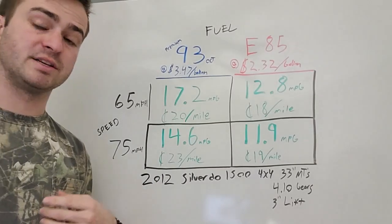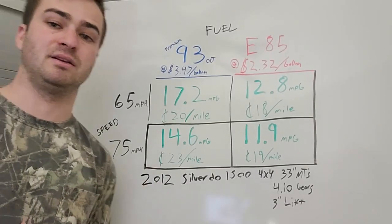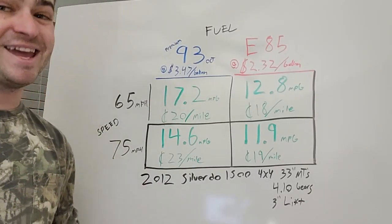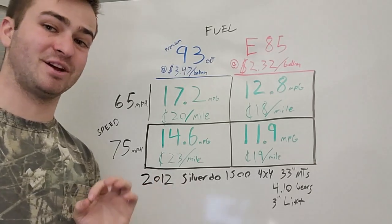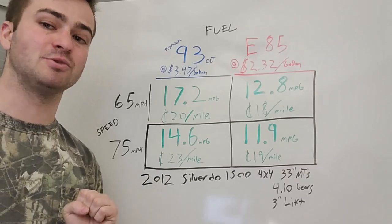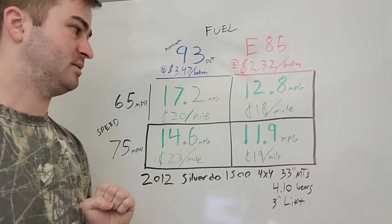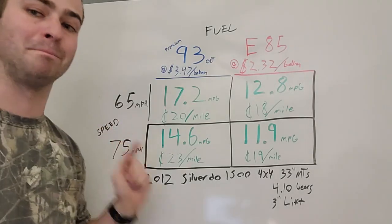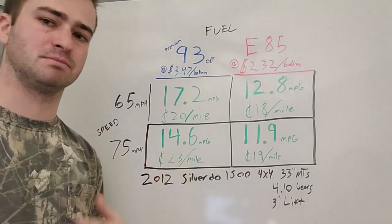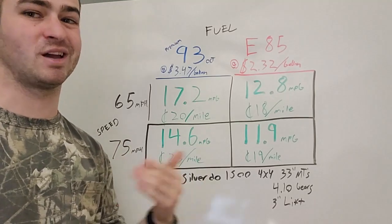However, if your vehicle does require 93 octane which is very expensive and is still able to run flex fuel E85 there just might be an advantage to running it when you calculate the cost per mile because E85 is much cheaper per gallon but you can't go as far.